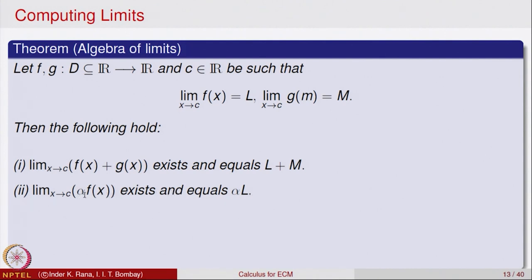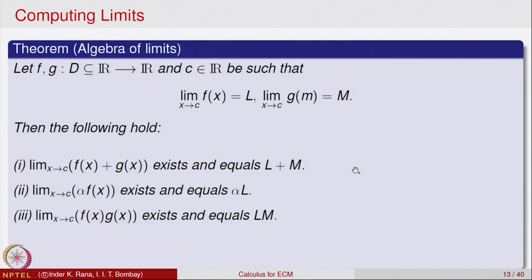As a consequence, if I take alpha equal to minus 1, then the limit as x goes to c of minus f(x) will be equal to minus L. That can be combined with the earlier result to say that the limit of f(x) minus g(x) will be equal to L minus M. The third result is about the product of the two functions. The limit of f(x) times g(x) also exists and is equal to the product of the limits, that is L times M. So the limit of the product of the functions equals the product of the limits.